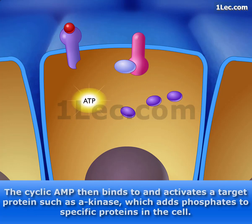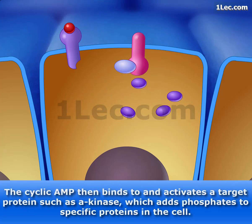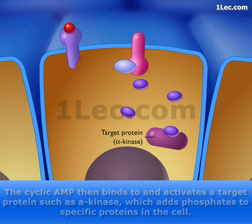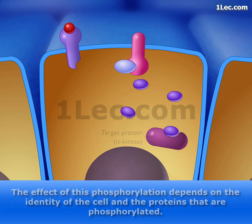The cyclic AMP then binds to and activates a target protein such as alpha kinase, which adds phosphates to specific proteins in the cell. The effect of this phosphorylation depends on the identity of the cell and the proteins that are phosphorylated.